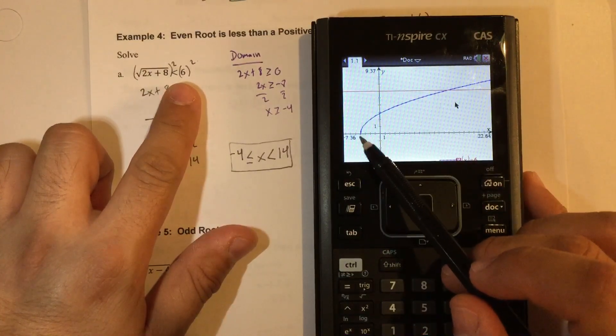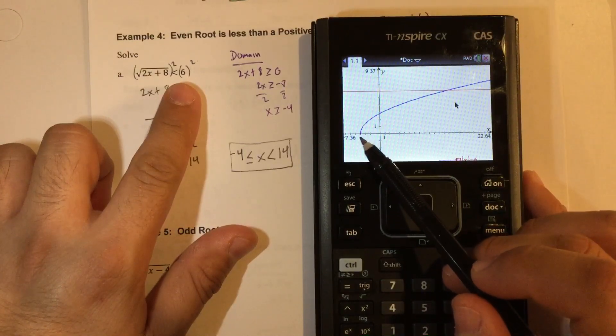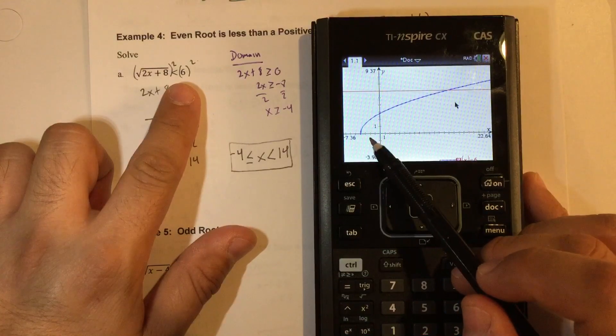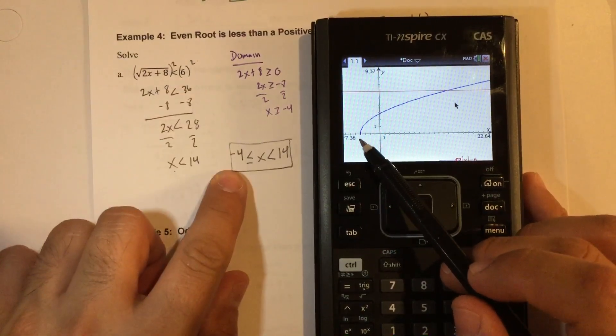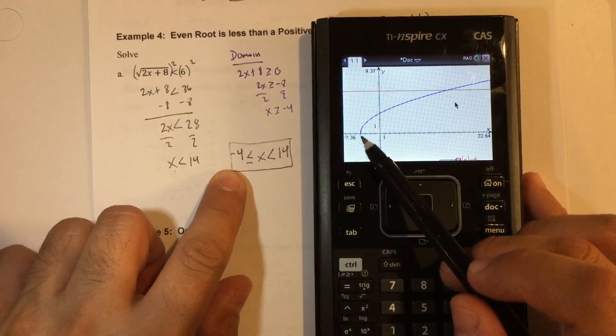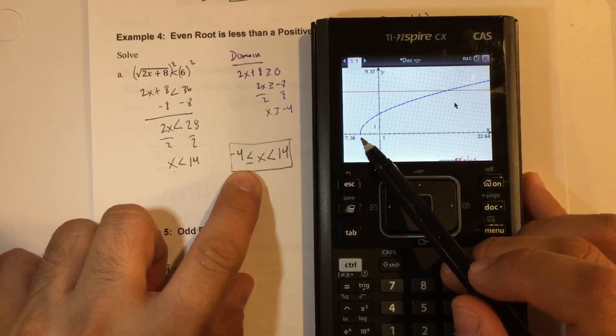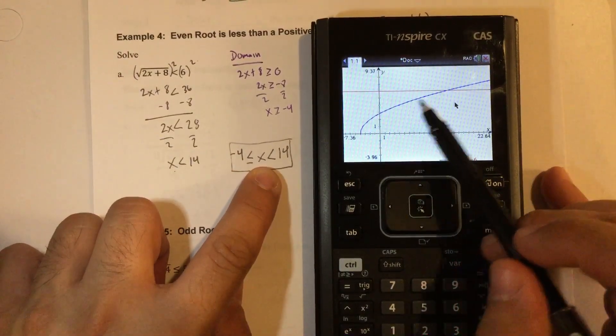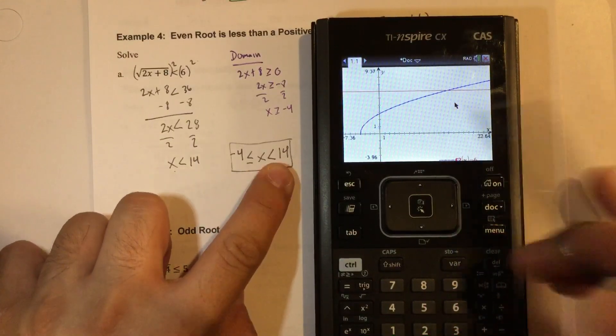So it starts here. So notice it doesn't start at negative infinity. It starts at this point here. You can go back. This one you can count pretty easily. Negative 1, negative 2, negative 3, negative 4. So it starts at negative 4. We know the starting point of a square root is a closed circle. That's why it's equal to x, which is less than. If you continue all the way right here, this value should be 14.